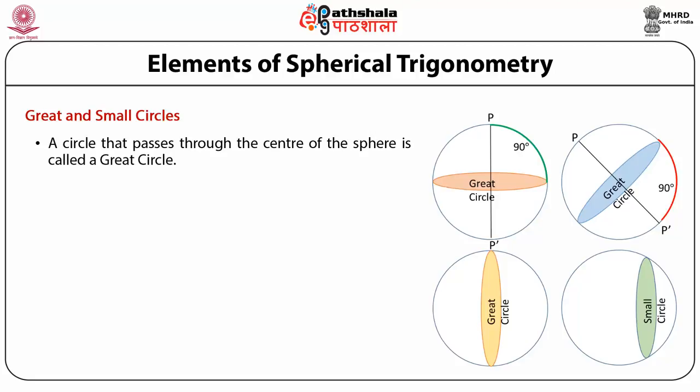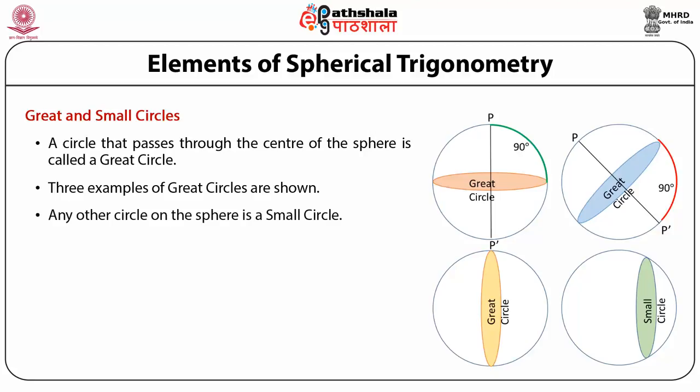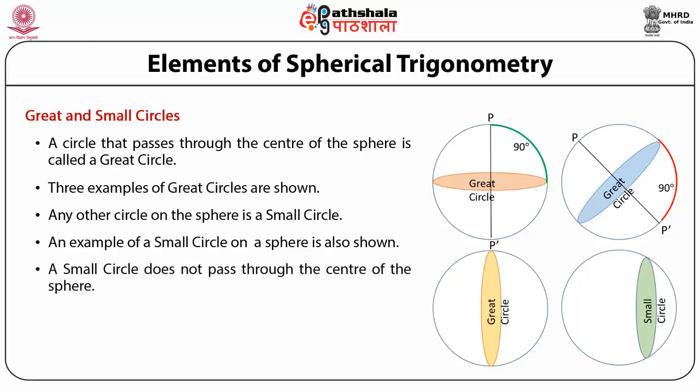The circle that passes through the center of a sphere is called a great circle. Any other circle is a small circle. We have shown three great circles and a small circle — a small circle does not pass through the center of the sphere. An example of a great circle is our equator and an example of a small circle is the Tropic of Cancer or Tropic of Capricorn. A line perpendicular to the great circle passing through the center of a sphere meets the sphere at two points, called the poles of that great circle. In this picture we have shown points P and P' which are the poles of the great circles.